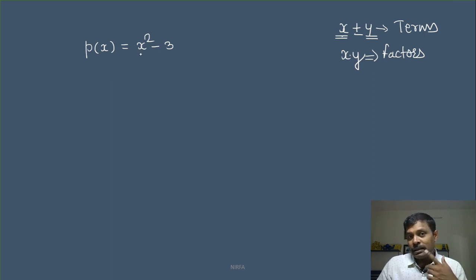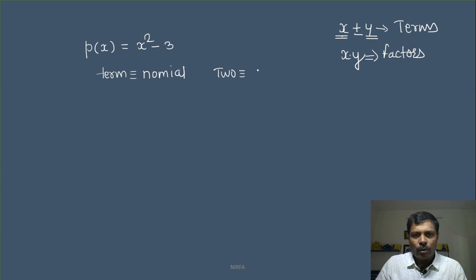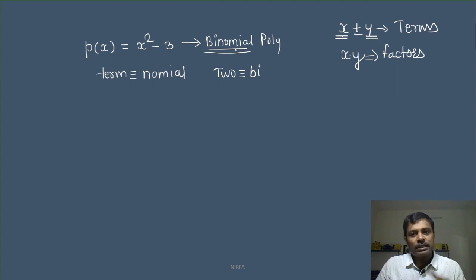इसमें कितने terms हैं? 2. Term को बोला जाता है 'nominal', और दो term है, तो दो को language में बोला जाता है 'bi'। इसलिए इस polynomial का नाम हो गया — binomial polynomial। तो यह binomial से knowledge मिलता है: bi मतलब two, nominal मतलब terms। यह एक polynomial है और इसके अंदर दो terms हैं।